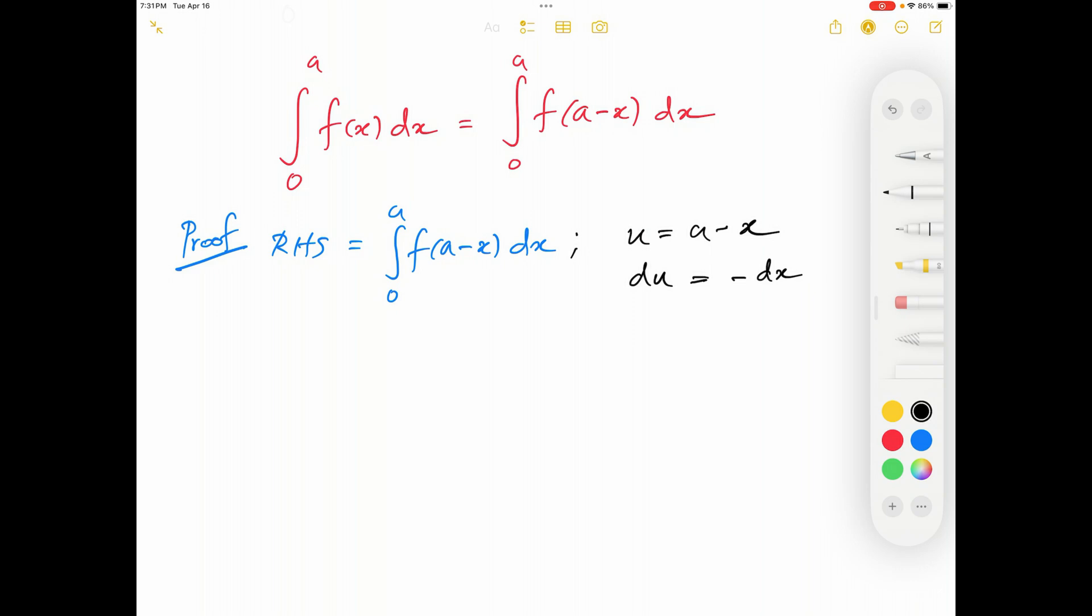After using that substitution, I should also change the limits accordingly. Earlier, we had x going from 0 to a. Now this x has become u. So when x is equal to 0, u, according to this substitution, u should be equal to a minus 0, which is equal to a.